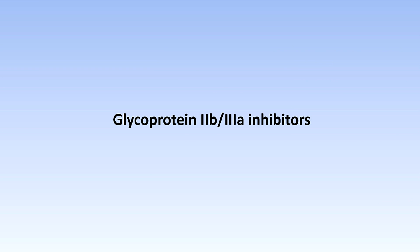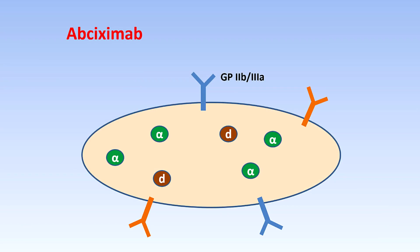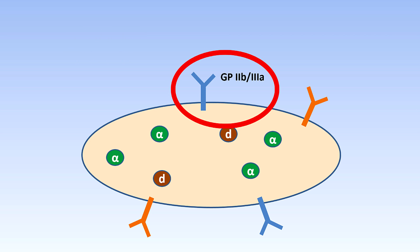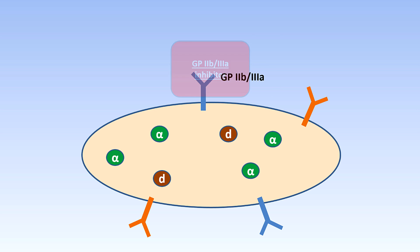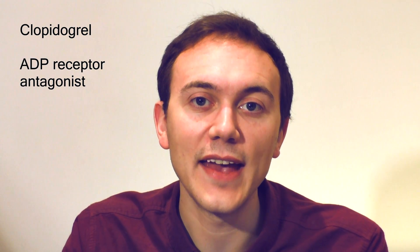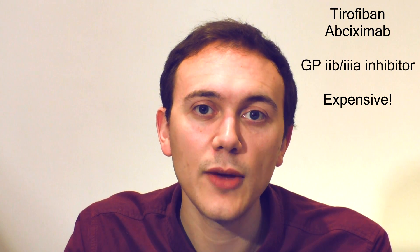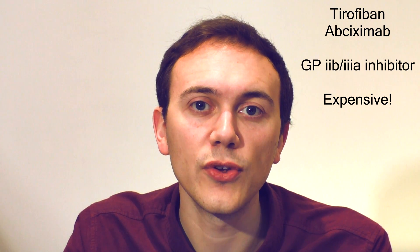The next group of drugs you possibly haven't heard of because they're quite new and in the UK at least they're only used in a few different situations — they're not used very commonly at all and they're also very expensive. They include tirofiban and the monoclonal antibody abciximab. All of these drugs inhibit the glycoprotein 2b3a receptor, which is the one that binds onto fibrinogen and von Willebrand factor. So aspirin inhibits the cyclooxygenase enzyme, clopidogrel works by inhibiting the ADP receptor on platelets, and these new drugs like tirofiban and abciximab work by inhibiting the glycoprotein 2b3a receptor.